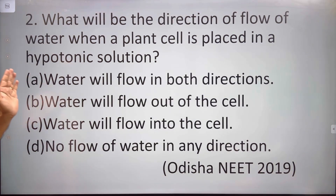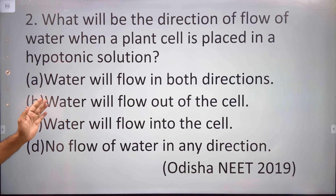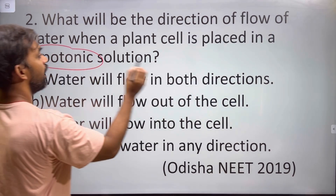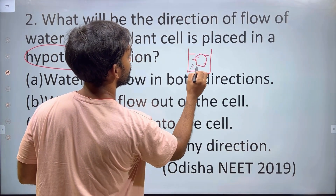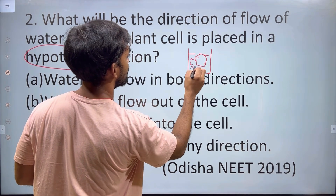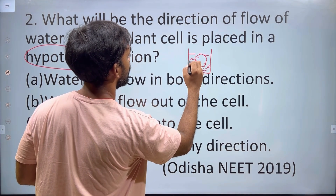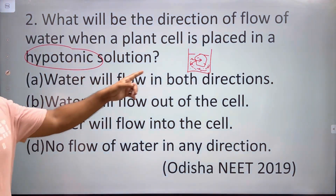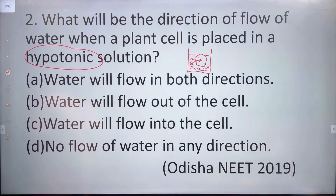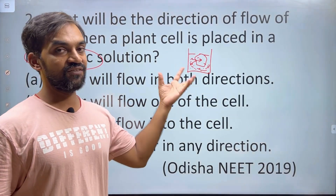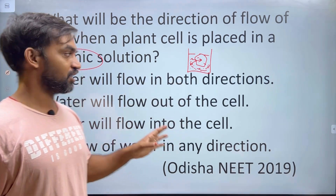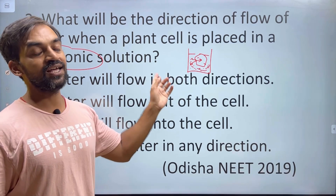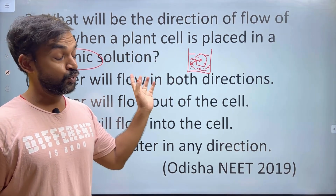What will be the direction of flow of water when a plant cell is placed in a hypotonic solution? In a hypotonic solution, water flows into the cell. In a hypertonic solution, plasmolysis occurs. In an isotonic solution, there is no movement. So in a hypotonic solution, water flows into the cell.